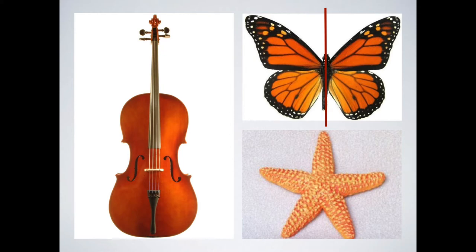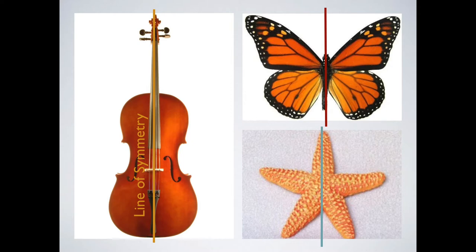We can do the same with this instrument — if we draw a line down the middle, we have two equal halves on either side. This imaginary line is known as the line of symmetry. We can do this with the starfish too, and you probably notice a pattern dividing these objects in half with a vertical line. But the starfish is a little different and special in that there is more than one way to draw a line of symmetry on it.